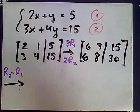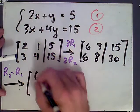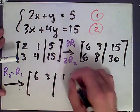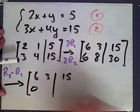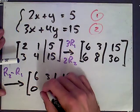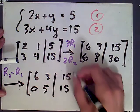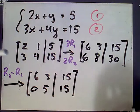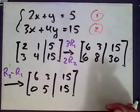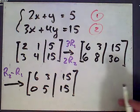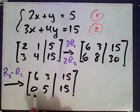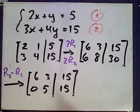That gives row 1 stays the same. 6 minus 6 leaves 0, 8 minus 3 leaves 5, 30 minus 15 leaves 15. So there was only one entry to clear, which was the one below the 6.